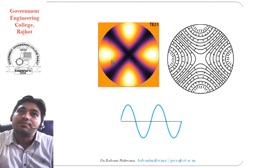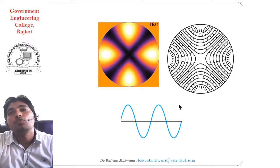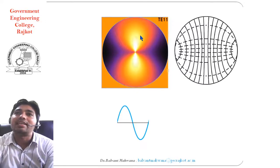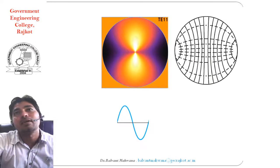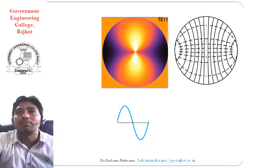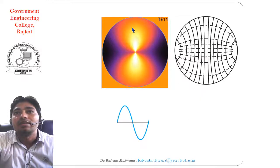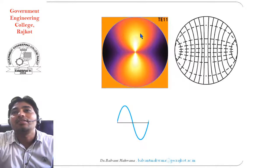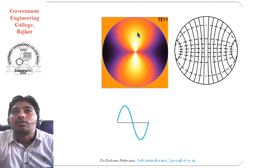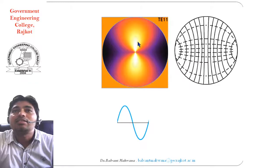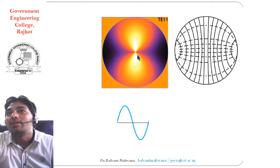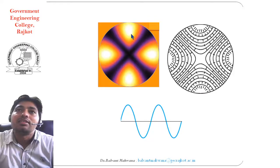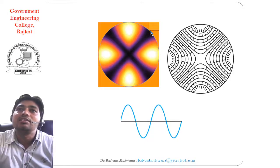Looking at the next mode, we can see four maxima, meaning two full cycle variations — four divided by two equals two, so n = 2. In the previous case there were only two maxima, giving one cyclic variation. So the number of maxima divided by two gives the first subscript N. For this mode with four maxima, n = 2, and with one minima along the radius, it is TE21 mode.